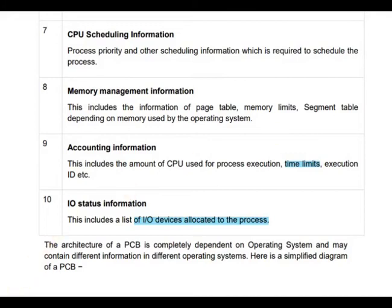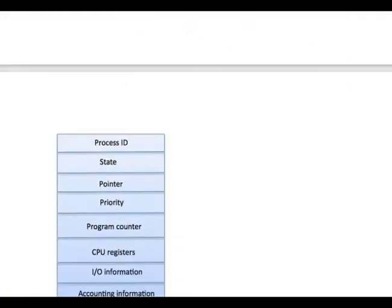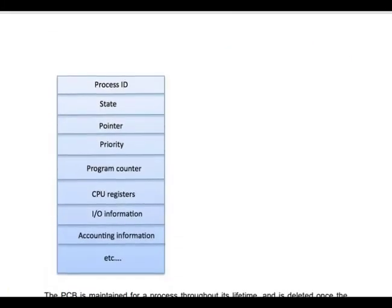Based on this, let's look at the architecture of a PCB. It contains: Process ID, State, Pointer, Priority, Program Counter, CPU Registers, IO Information, Accounting Information, and so on.